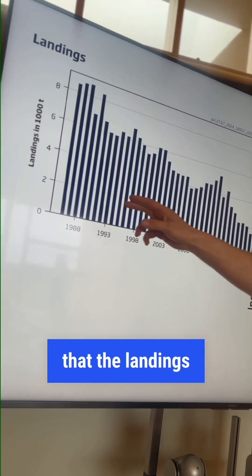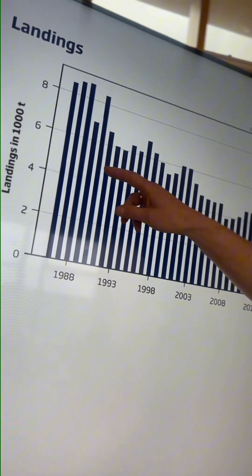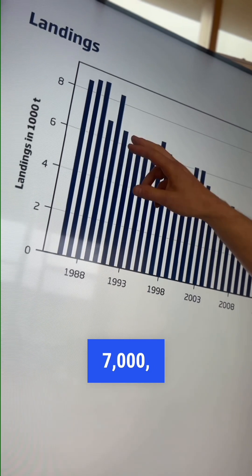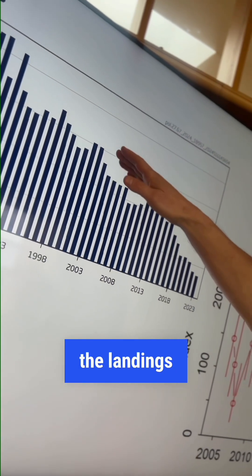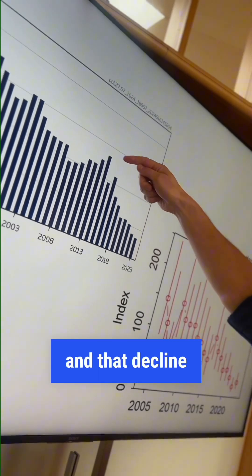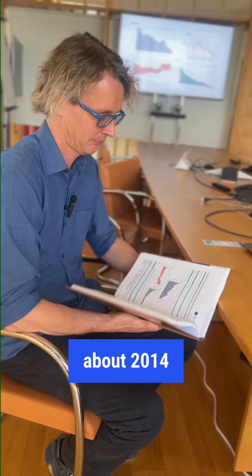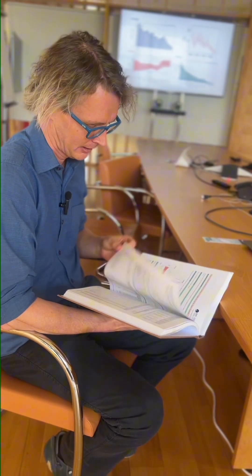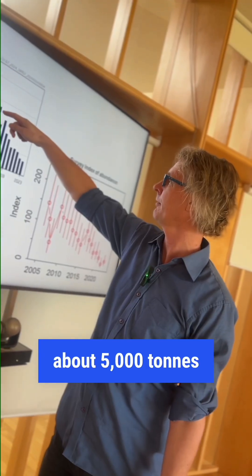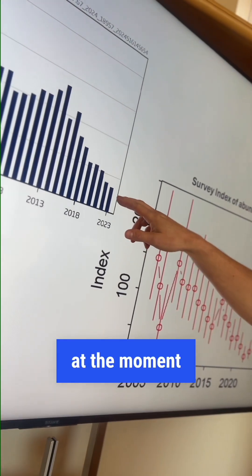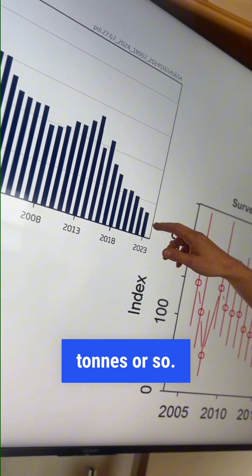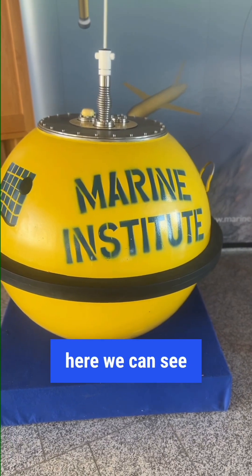You can see that the landings were fairly steady back in time, around six to eight thousand tons. Around 2000, the landings started to decline, and that decline has been particularly strong since about 2014, where the landings declined from about 5,000 tons to levels at the moment that are around 1,500 tons.